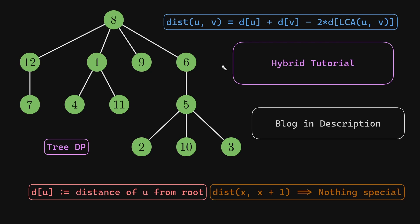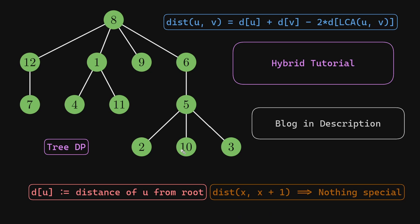Let's start with a very simple problem of finding the distance between any two nodes in a tree, suppose node 2 and node 3. If you define d to be the distance of a node from the root, then the distance between two nodes equals the sum of their distances from the root minus 2 times the distance of their LCA. So if you know how to compute the lowest common ancestor, you can solve this. But what if you don't know LCA? What if I ask you the distance between node x and x plus 1? Not really easier, because node x and x plus 1 can be located anywhere in the tree, so this problem is just as difficult.